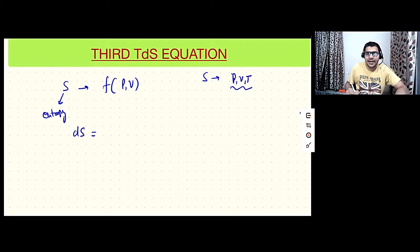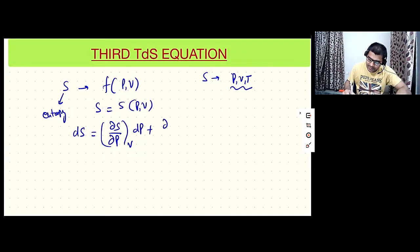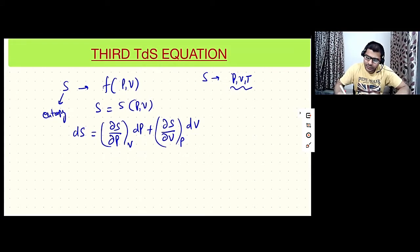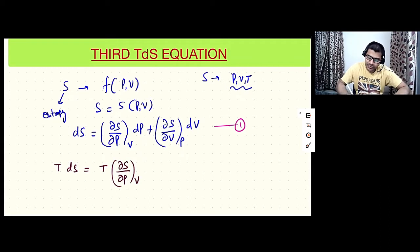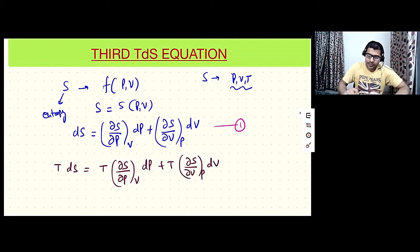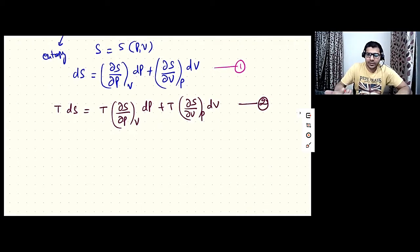Since S is a function of P and V, I can write dS as: dS = (∂S/∂P) at constant V · dP + (∂S/∂V) at constant P · dV. Let me call this equation one. Multiplying equation one by T gives: TdS = T(∂S/∂P)_V dP + T(∂S/∂V)_P dV. Let this be equation two.